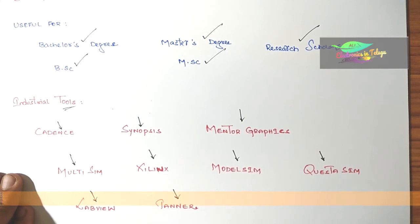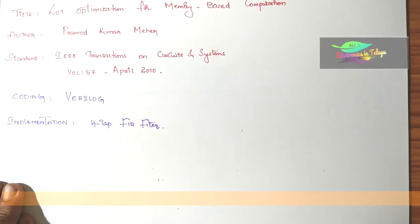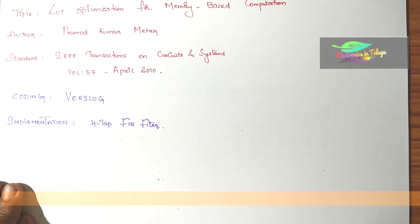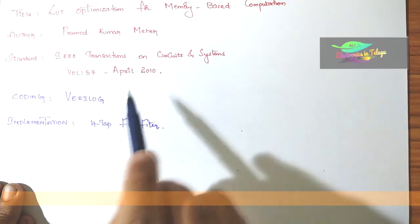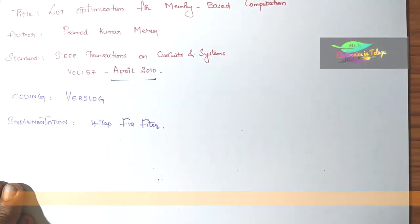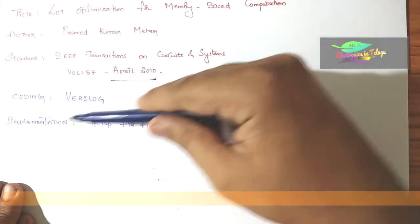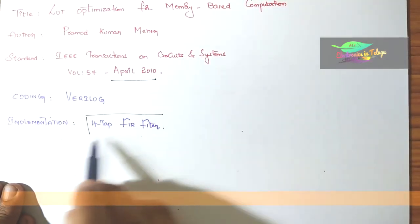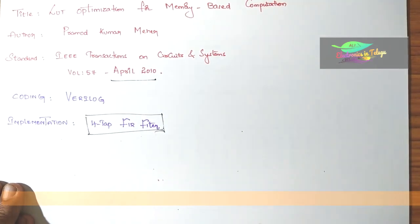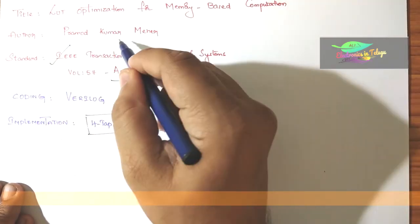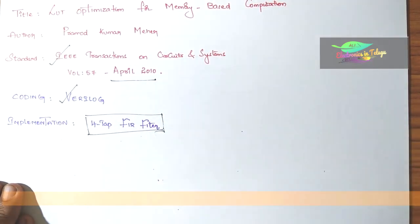This project I will run - this simulation project - and then I will show the layout and the RTL design. LOD Optimization for Memory Based Computation, IEEE Standard Journal, Volume No. 57, April 2010. This is important. Reading this journal paper, I realized the application will implement four types of FIR filter.